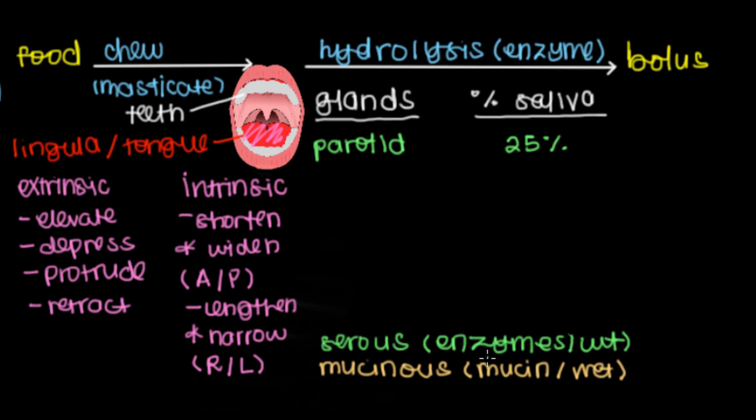The next type of gland are submandibular glands, which release about 70% of saliva. They sit below the mandible, which is the jawbone. These are also mainly serous, but they certainly have some mucinous stuff that they release as well.